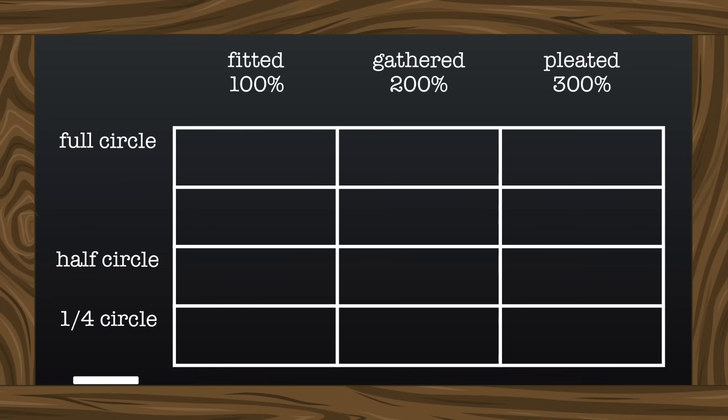half circle skirts, quarter circle skirts, which are also called A-line skirts, and I'll make a 3 quarter circle skirt, because sometimes you want a nice in-between option.